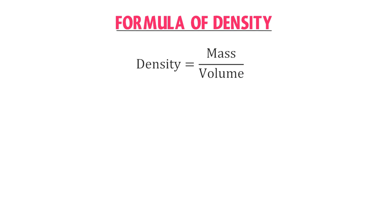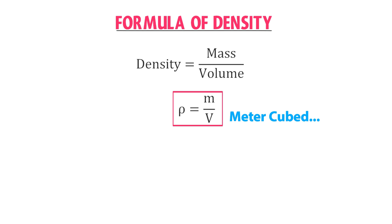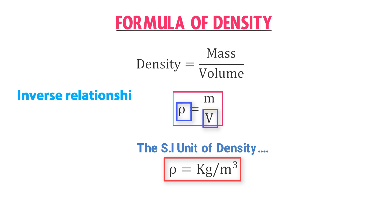Now, what is the formula of density? The formula of density is mass per unit volume: rho equals m upon v. Density is denoted by the Greek letter rho. The SI unit of mass is kg, while the SI unit of volume is cubic meter. Thus the SI unit of density is kg per cubic meter. Remember that if you increase the volume of a given mass, density will decrease, because there is an inverse relationship between density and volume.